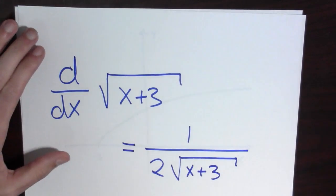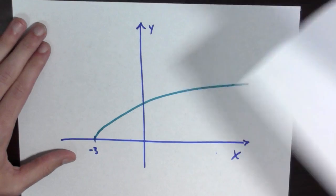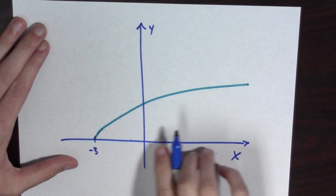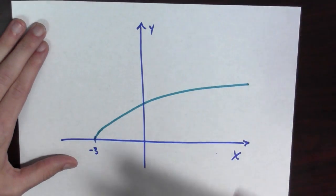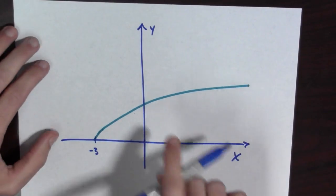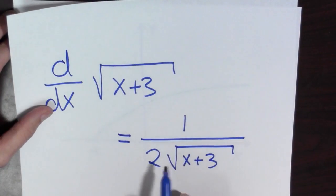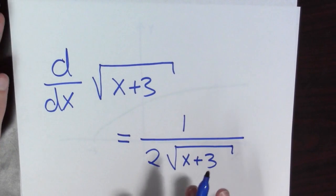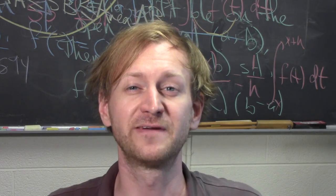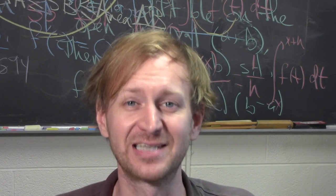This is a formula for the slope of the tangent line for different values of x. Let's look at a picture of the curve. As x becomes very large, you can see the curve kind of levels out more and more. That means the slope of the tangent line is getting closer and closer to 0, and that agrees with what our formula is showing us. So, we've computed a derivative involving a square root, and we checked to make sure that our answer makes sense.